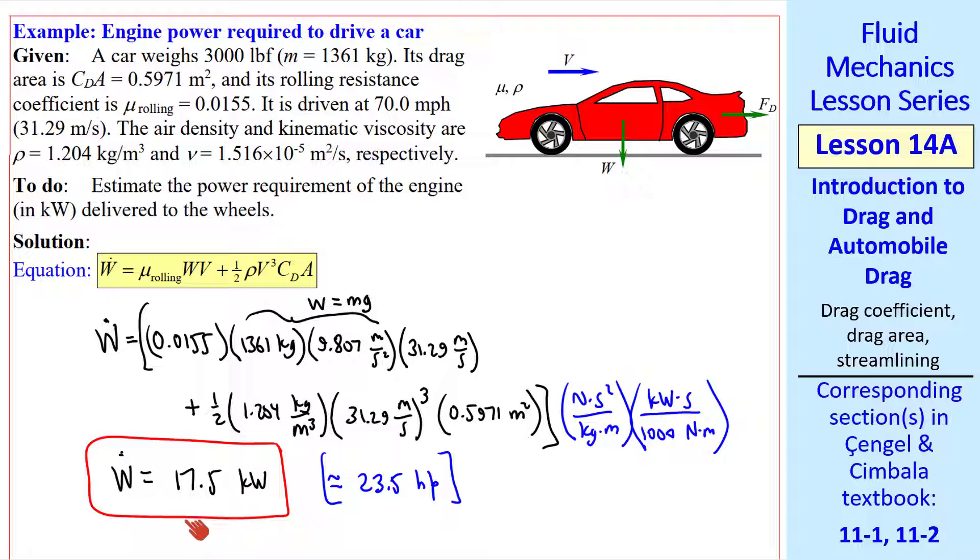As I mentioned previously, the actual power delivered by the engine must be greater than this, due to inefficiencies and losses in the transmission and axle, etc. Also note that this is at steady speed. When you accelerate after a stoplight, the power delivered to the wheels will be much greater than this value during the acceleration.